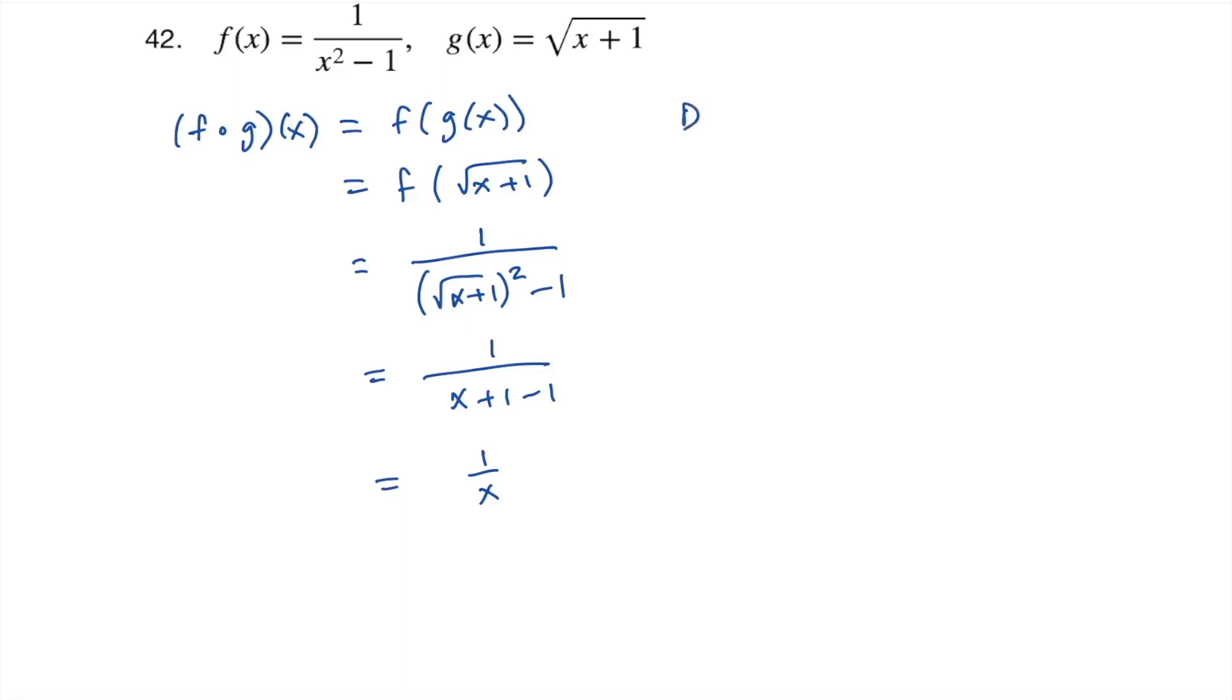So the domain for g of x is we cannot allow negative square roots. So no negative square roots. That means x plus one is not allowed to be zero. So we subtract one from both sides and we get x is not allowed to be negative one.